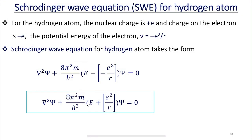Hello my dear students. In my last class, I was explaining about the Schrödinger wave equation for a particle in a one-dimensional box. We considered a particle having a mass m restricted to move in a one-dimensional box of length a — moving in only one dimension, which could be the x, y, or z coordinate. The motion of an electron restricted to move within a small distance of length a in the x direction can be compared with the motion of a particle in a one-dimensional box.